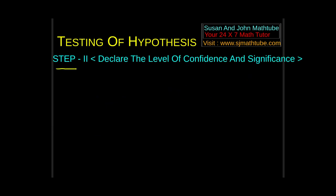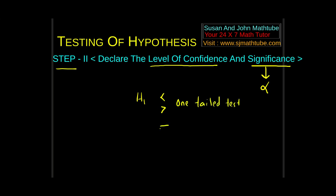Step number two: we declare the level of confidence and significance. We have come across confidence and significance when we learned confidence intervals. Significance is denoted by alpha — you declare how much confidence you want when making the decision. If H1 contains less than or greater than, it will be called a one-tailed test. If H1 contains not equal to, it is called a two-tailed test. In a one-tailed test we use alpha, and in a two-tailed test we use alpha divided by 2.